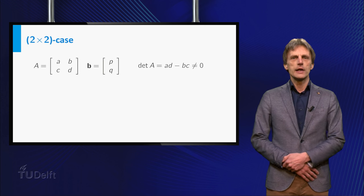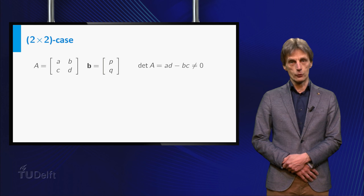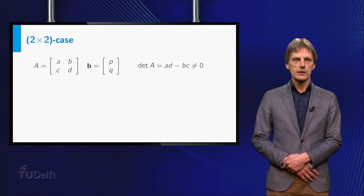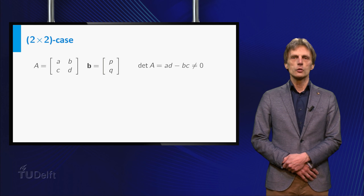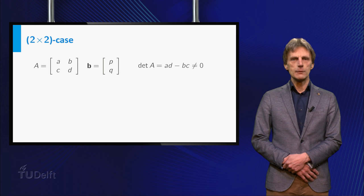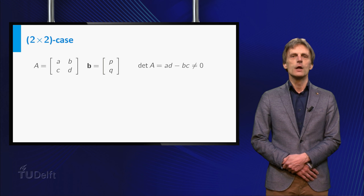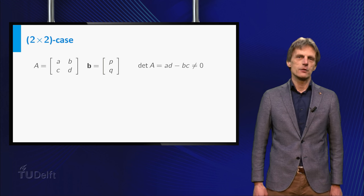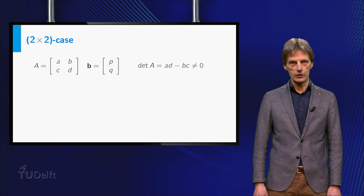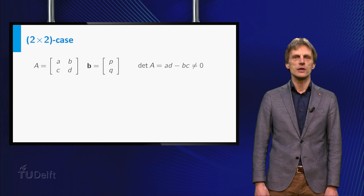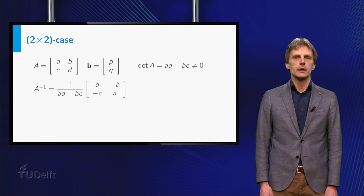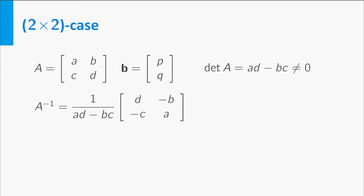Let's see what happens in the case of a system A times x is equal to b, where A is a 2 by 2 matrix. So consider A is equal to [a b; c d] and b is equal to [p; q]. Assume that the determinant of A is unequal to zero, which implies that A is invertible.